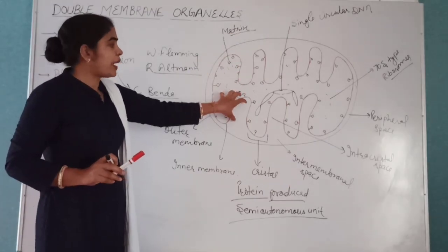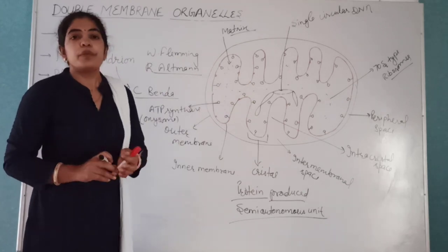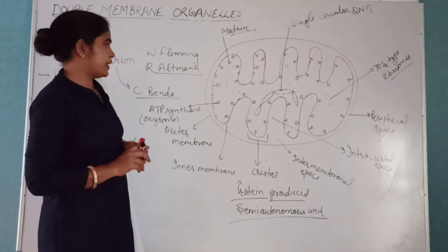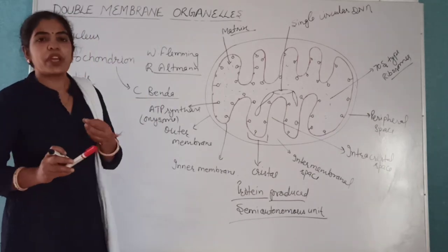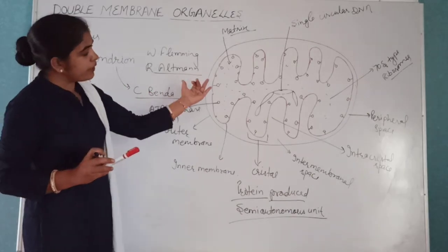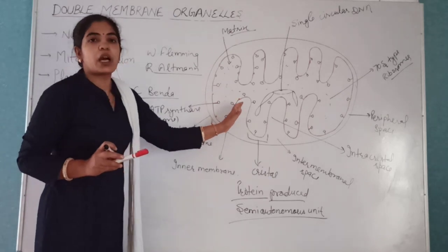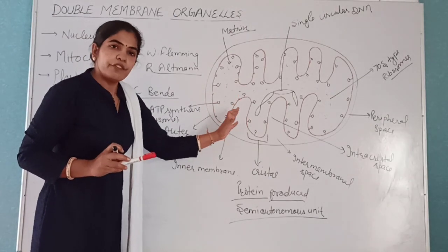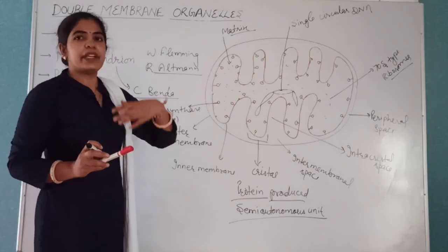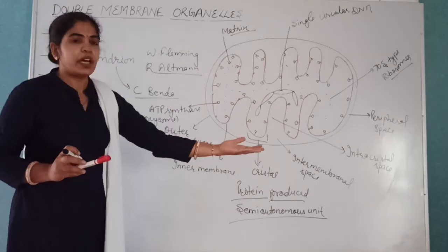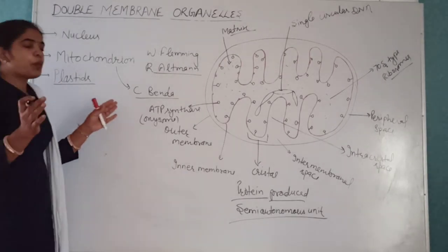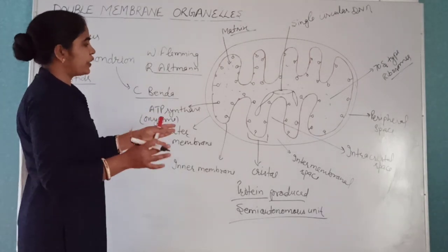This means mitochondria originated from an ancestral prokaryotic cell that entered another cell. Furthermore, just as prokaryotic bacteria replicate by binary fission, mitochondria also replicate by binary fission — supporting the idea that these are prokaryotic cells that entered another cell and began behaving as energy-producing organelles.